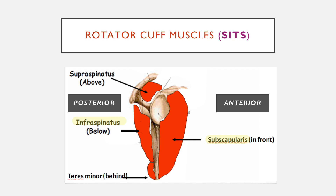Infraspinatus lies below the spine of the scapula. Supraspinatus lies above the spine of the scapula. And teres minor is the only one where the name doesn't really suggest where it lies, but it lies posterior to the scapula and inferior — so just under infraspinatus.